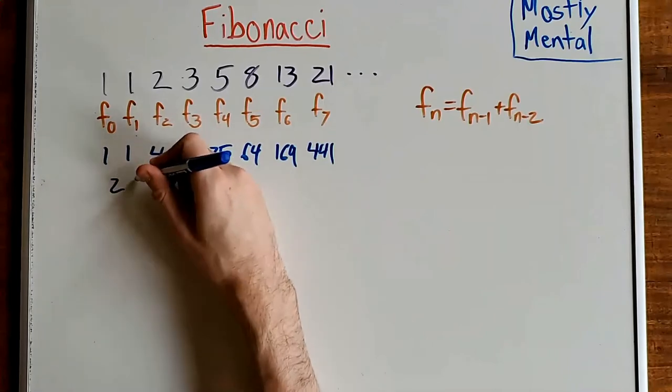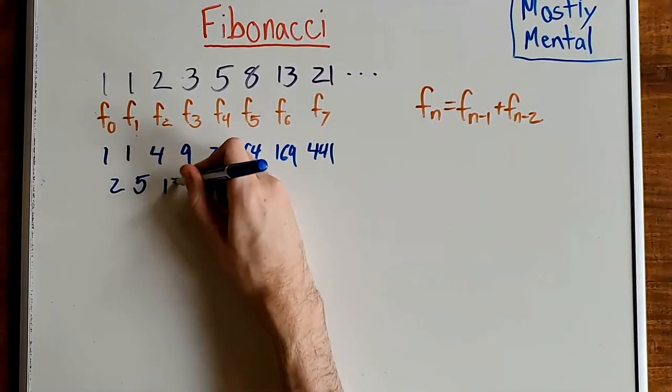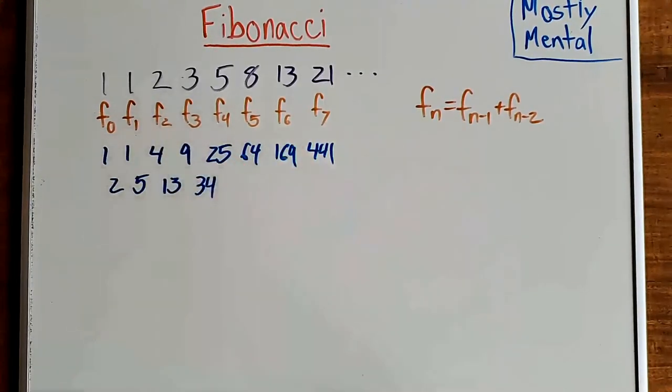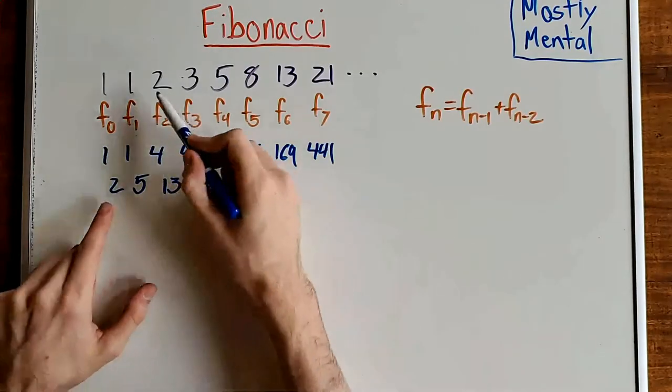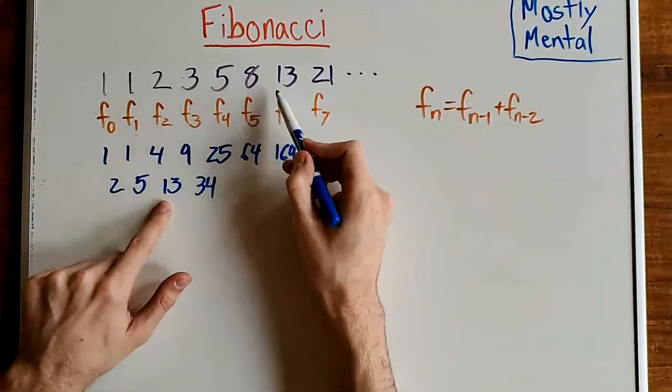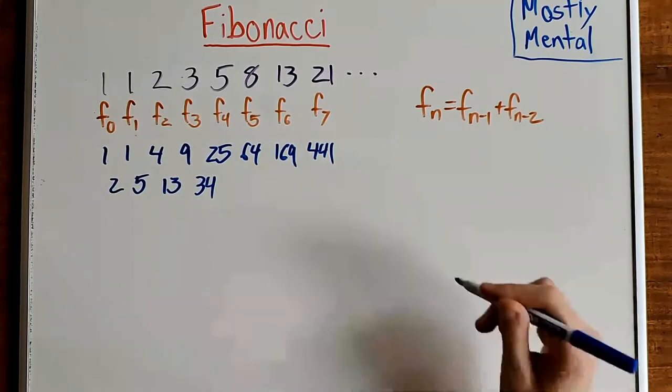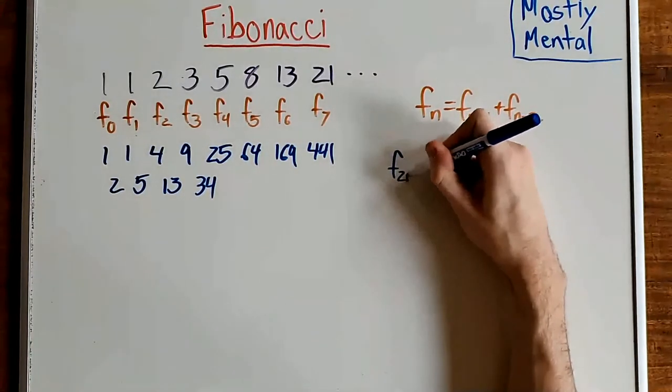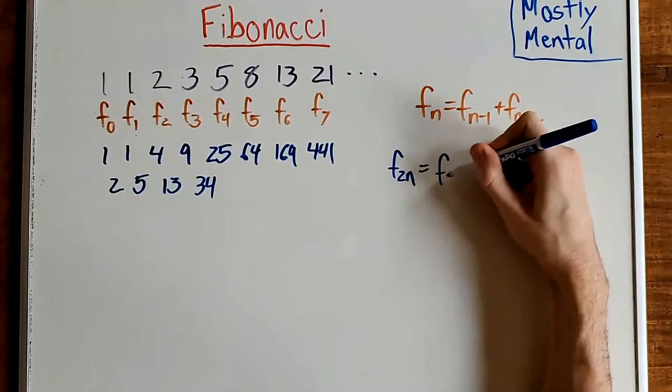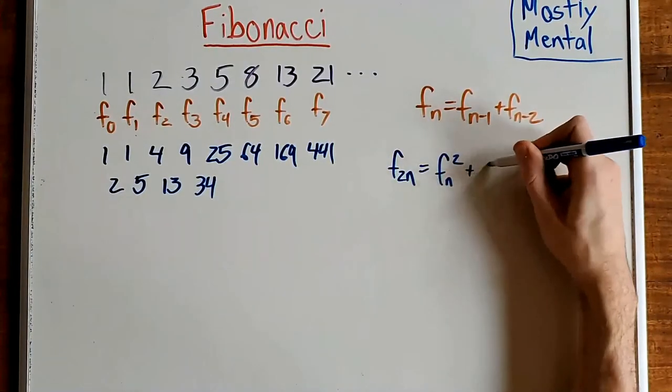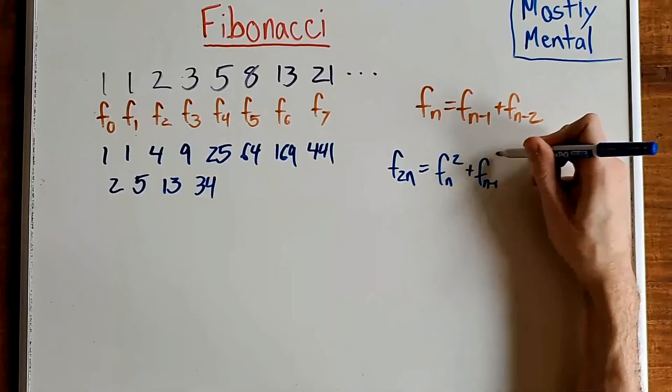Well, we get 2, 5, 13, 34. Huh, looks like we're getting every other Fibonacci number. Putting that into a formula, we get F sub 2n is F sub n squared plus F sub n minus 1 squared.